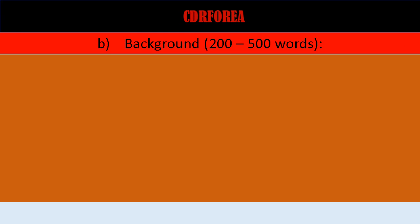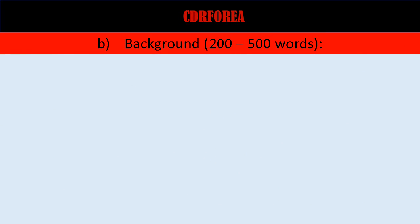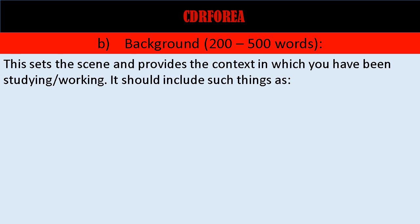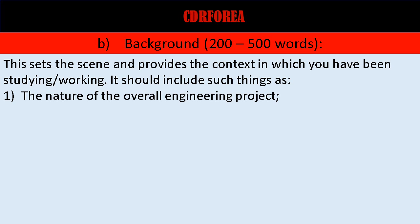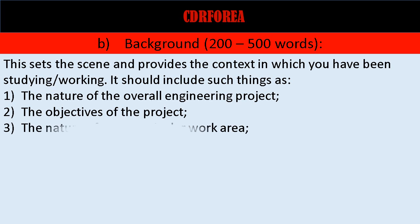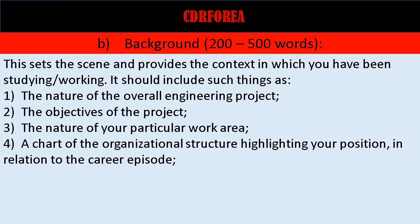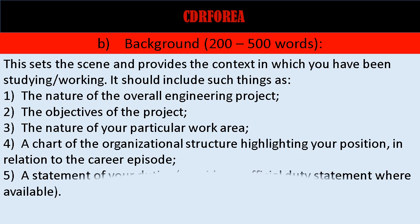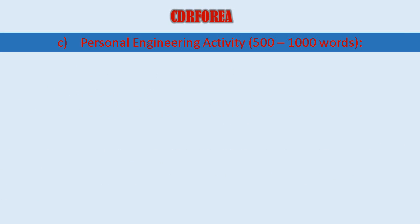Background (200 to 500 words): this sets the scene and provides the context in which you have been studying or working. It should include such things as: 1. The nature of the overall engineering project, 2. The objectives of the project, 3. The nature of your particular work area, 4. A chart of the organizational structure highlighting your position in relation to the career episode, 5. A statement of your duties — provide an official duty statement where available.